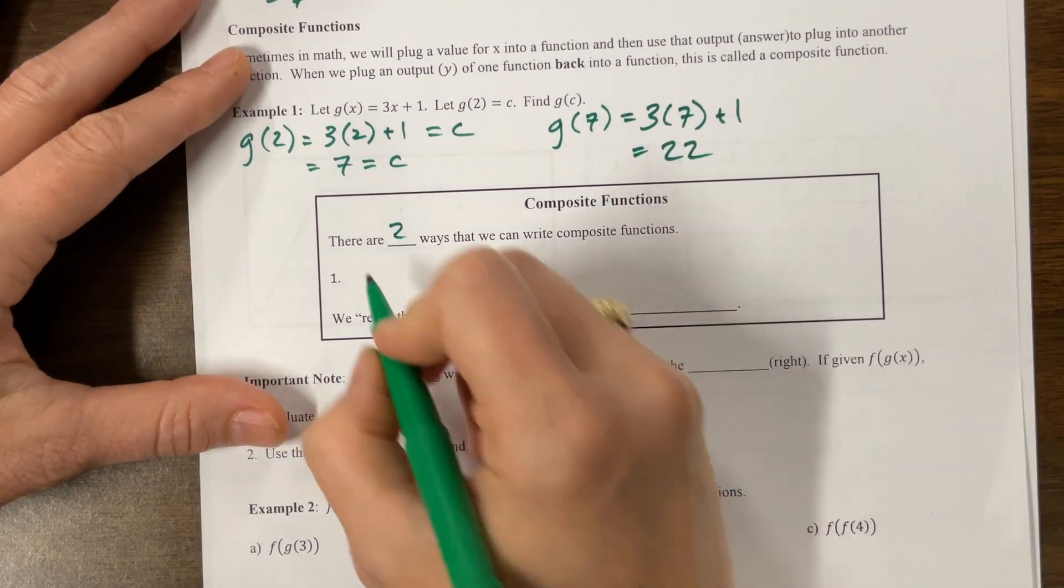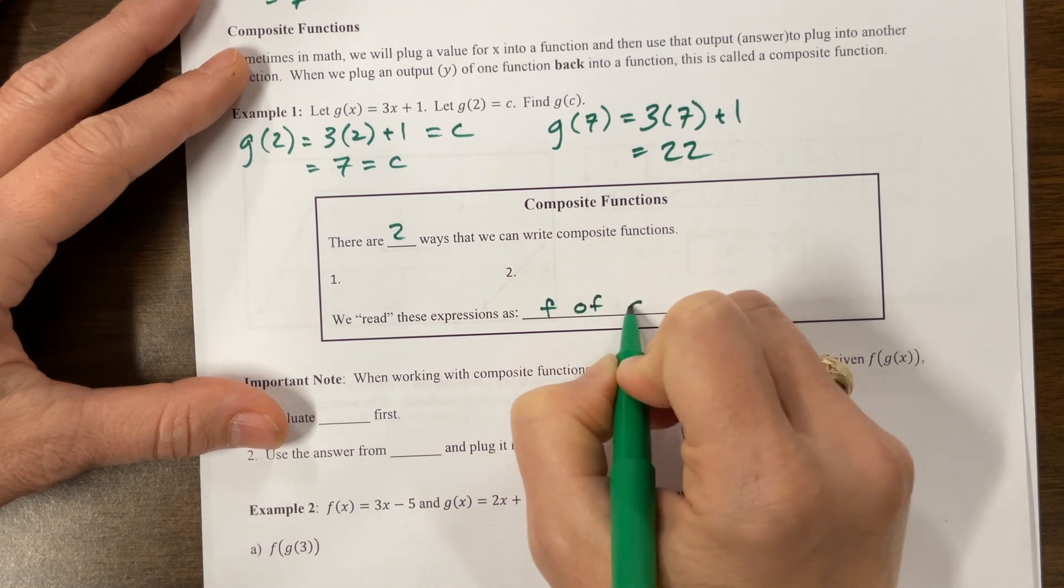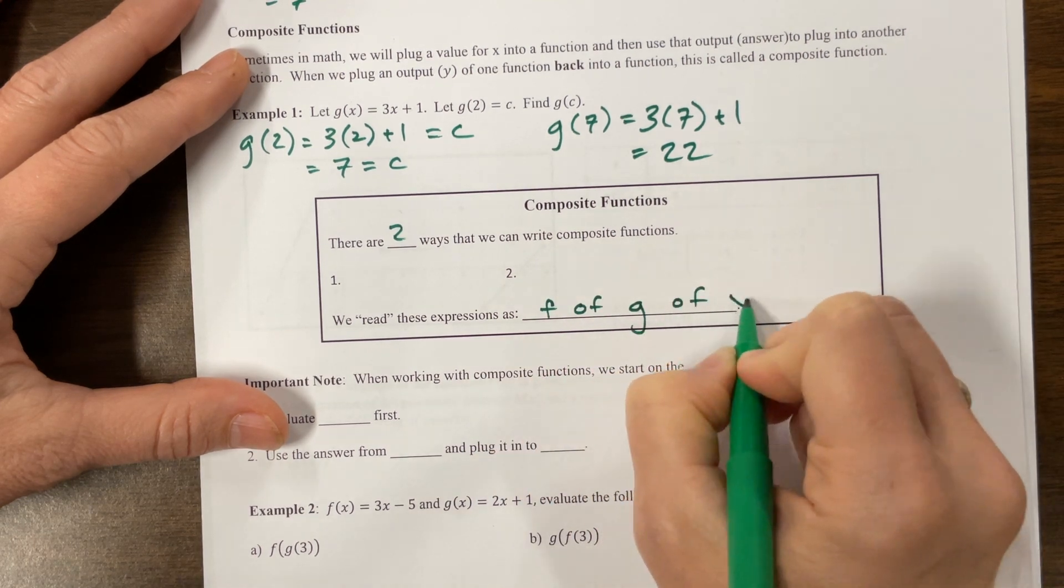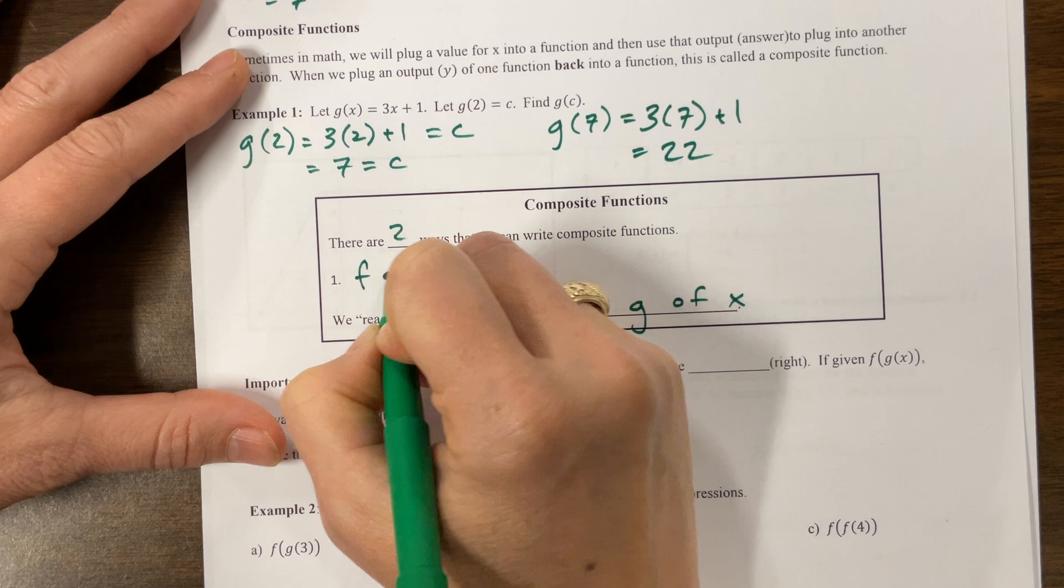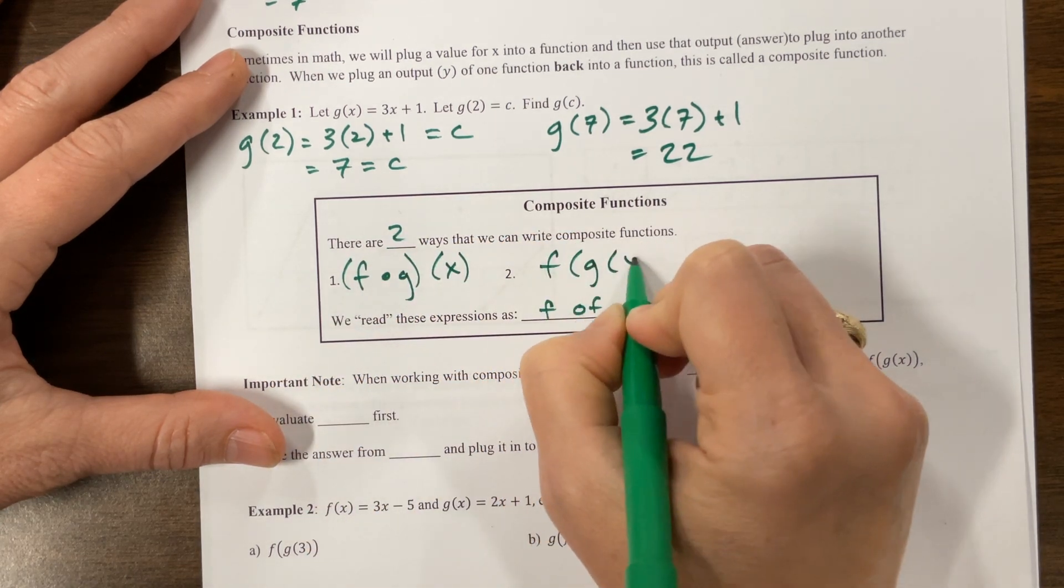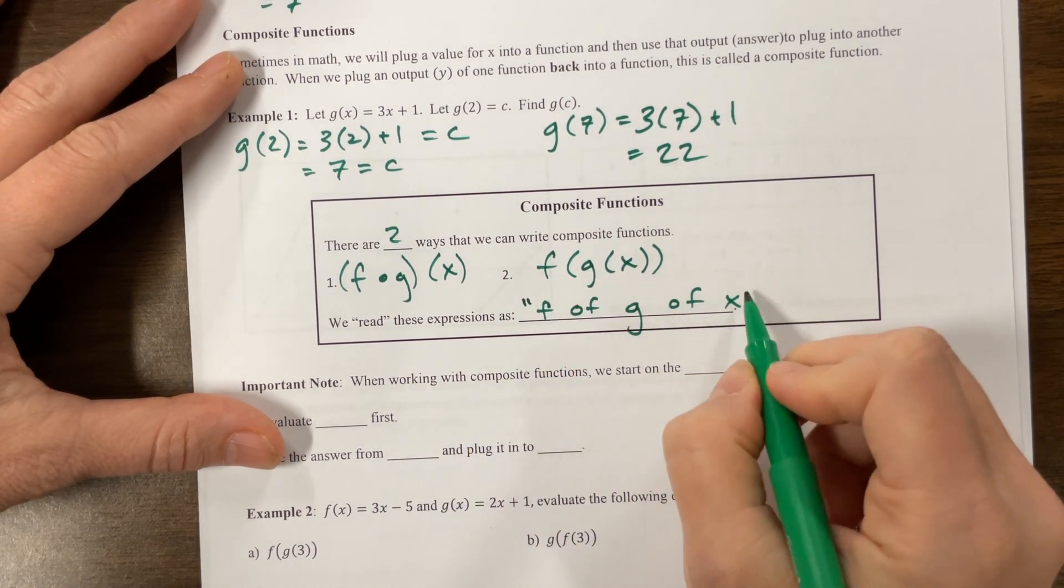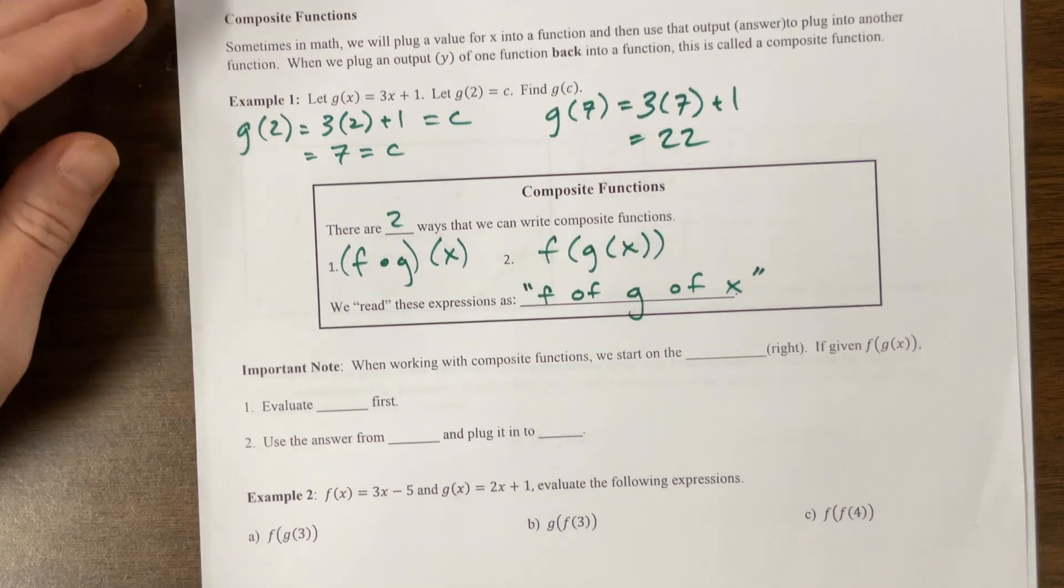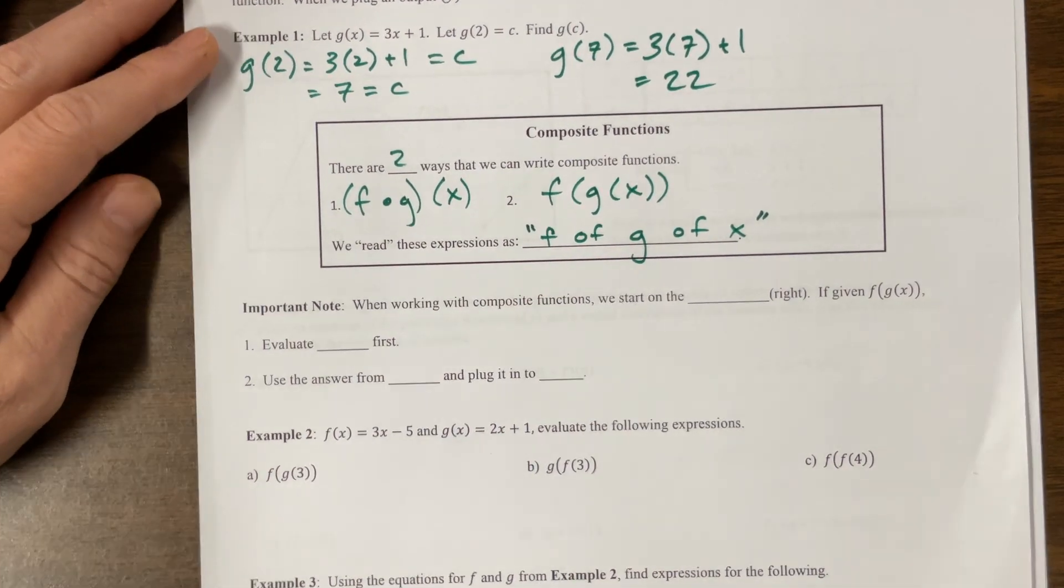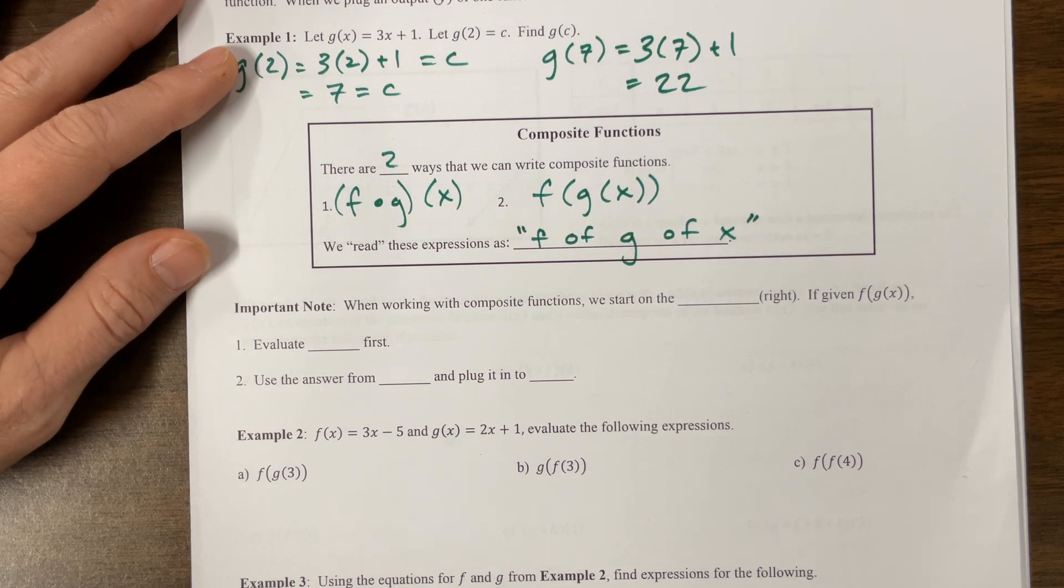There are two ways we can write composite functions, and both of these are read as f of g of x. So it's f, and then it looks like fog, and that's a little o thing, or we can do f of g of x written like that. And so both of these are read as f of g of x.